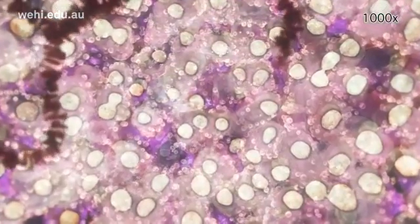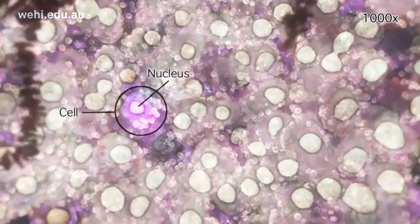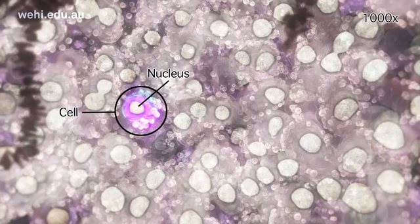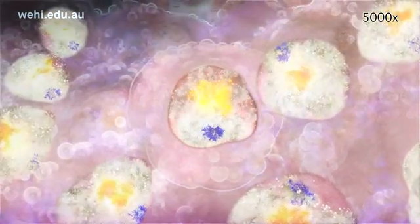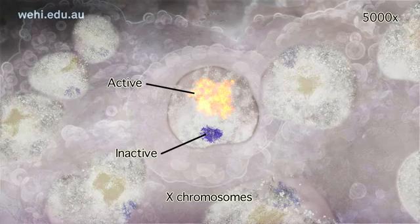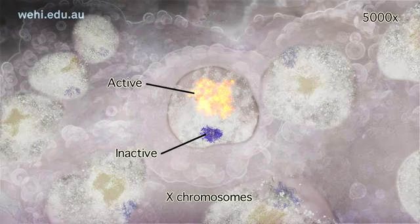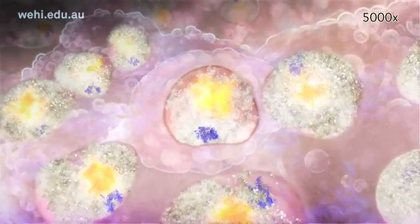We are now looking at cells from a female body. A full copy of the genome is found in the nucleus of every cell, and each cell has the same 23 pairs of chromosomes. We can now see individual X chromosomes. Highlighted here are two X chromosomes from one cell. The inactive X is compact in appearance, whereas the active X occupies a much greater volume, despite the two chromosomes having the same gene content.